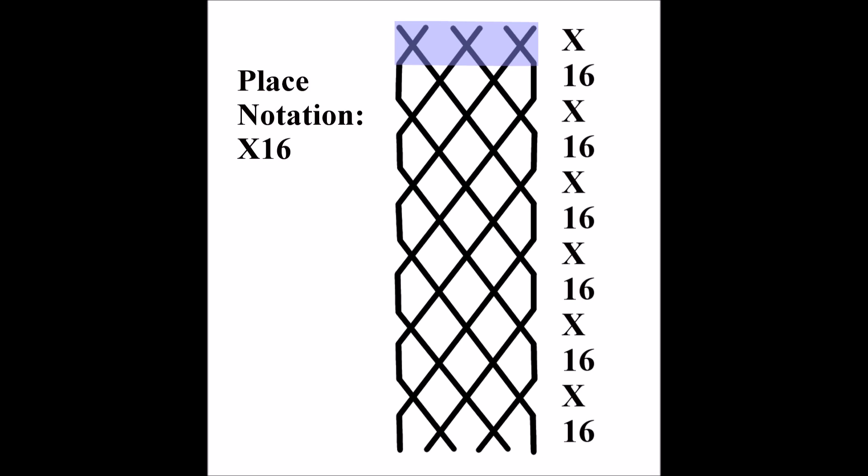Let's look at the first two rows in the diagram and the movement of the bells between them. You can see that the first two bells swap places with each other. The next pair of bells also cross over and so do the five and six. When every pair of bells swaps places in this way it is described using a cross in place notation. So we can describe what happens in the first change as simply cross.